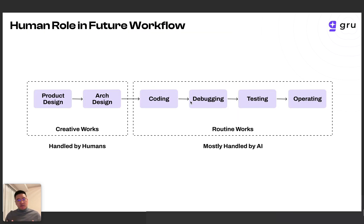Generative AI has shifted a lot of things, and people believe AI coding is going to be the future. We believe a lot of routine work will be handled by AI, including entry-level coding tasks, debugging, testing, and operating. But still, creative work — including product design, architecture design, and difficult issues — still needs to be handled by humans. So it must be humans and AI agents collaborating together to solve problems in the same workflow in the future.